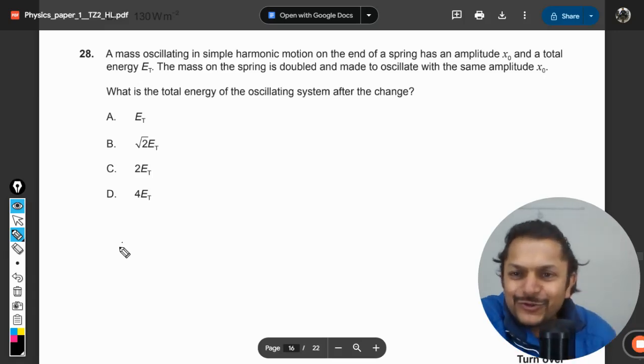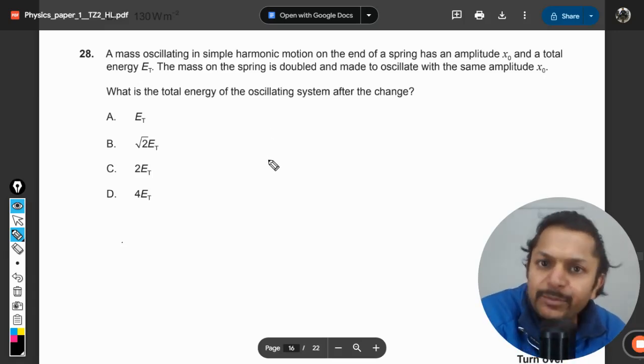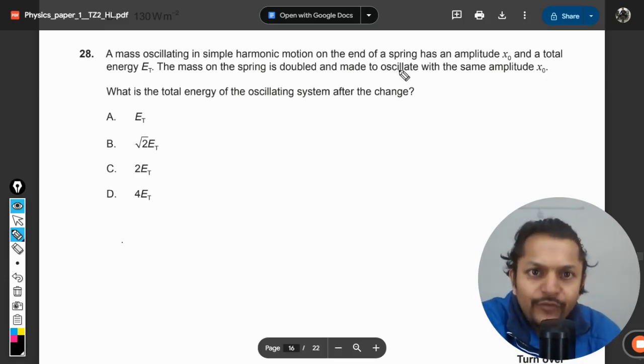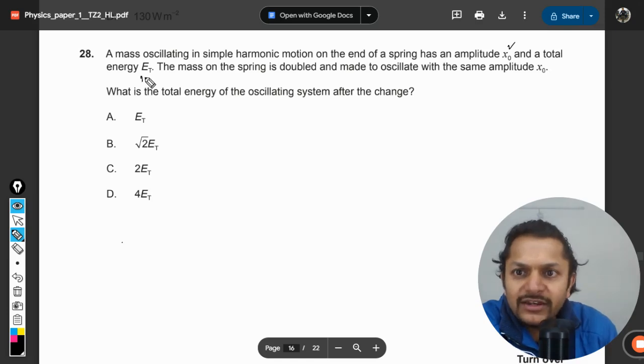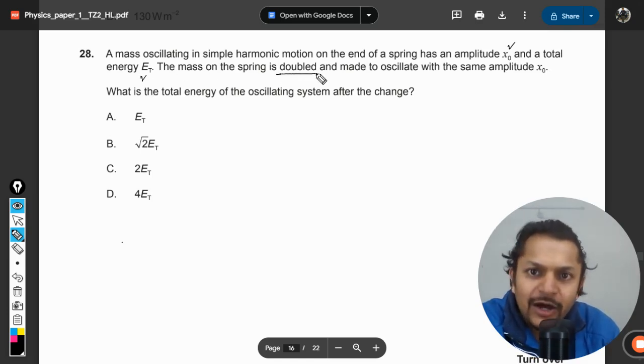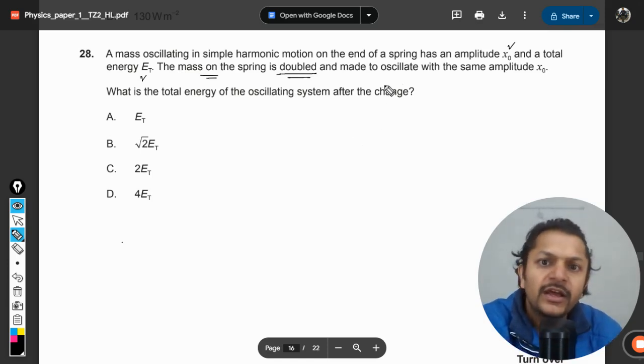Let us see what is in this question. A mass oscillating in simple harmonic motion on the end of a spring has an amplitude of x₀ and a total energy of E_t. The mass on the spring is now doubled, made to oscillate with the same amplitude x₀.